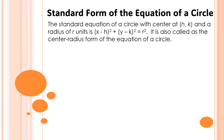The standard equation of a circle with center at (h, k) and a radius of r units is the quantity of x minus h squared plus the quantity of y minus k squared is equal to r squared. It is also called the center-radius form of the equation of a circle.